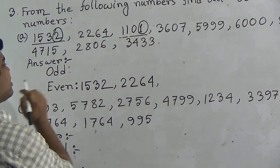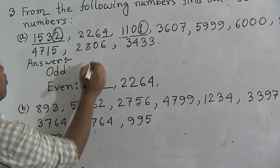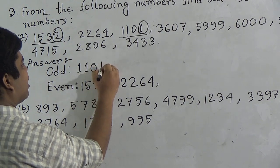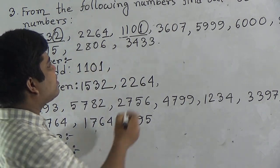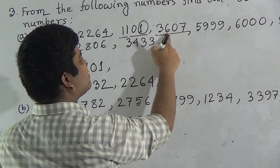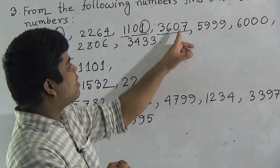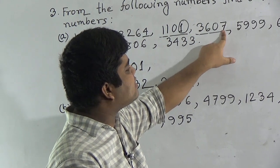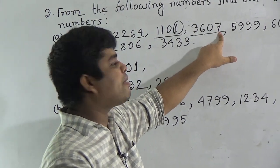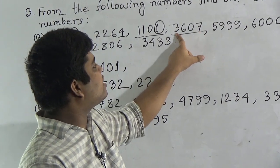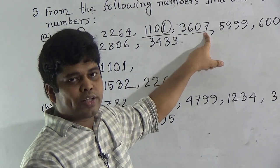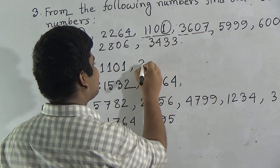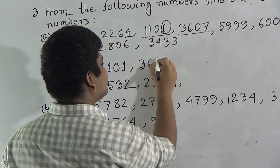Yes, we write one thousand one hundred one in the odd number section. Our fourth number is three thousand six hundred seven. The ones place digit is seven, which is an odd number. So three thousand six hundred seven is also odd, and we write three thousand six hundred seven in the odd number section.